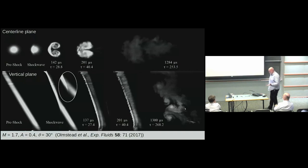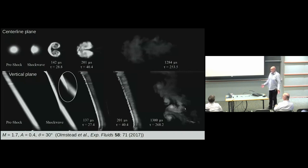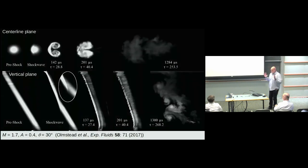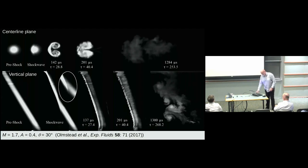Gradually, in the centerline plane, you see something associated with Richtmeyer-Meshkov instability: a pair of counter-rotating vortices. Whereas in the vertical plane, there is a lot of interesting stuff going on. Ultimately, there is something that looks like decaying turbulence — and it doesn't just look like it. The statistics very strongly suggest that this is indeed what it is, over quite a range of scales.